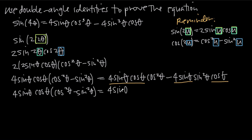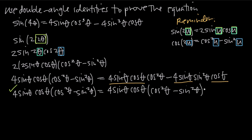So we can pull that out in front. When we remove it from the first term, we're just left with cosine squared of theta. When we remove it from the second term, we're just left with minus sine squared theta. Now you can see that the left-hand side and the right-hand side are exactly equal: 4 sine theta cosine theta times cosine squared minus sine squared on both sides. That's how you use double angle identities to prove that an equation is true.